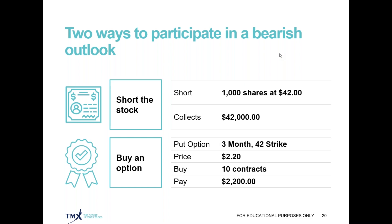The risk with short selling, of course, is if the shares skyrocket — wherever those shares go, you have to cover to cut your losses. An alternative, and the only way you can do this within your registered accounts, is to go to the options market and identify a three-month 42 strike put option trading at $2.20. To create the same short exposure as the stock example, you would buy 10 put contracts. Based on the multiplier — 100 times $2.20 times 10 contracts — you would pay out $2,200.